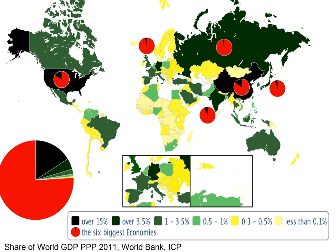GDP — Gross world product, purchasing power parity exchange rates: $59.38 trillion, $51.48 trillion, $23 trillion. GDP — Gross world product, market exchange rates: $60.69 trillion. GDP real growth rate: developed economies 2.2%, 2.0% predicted 2018; developing countries 4.3%, 4.6% predicted 2018.